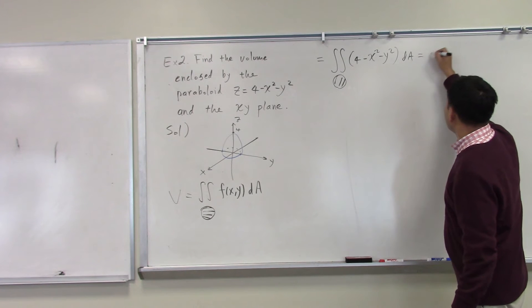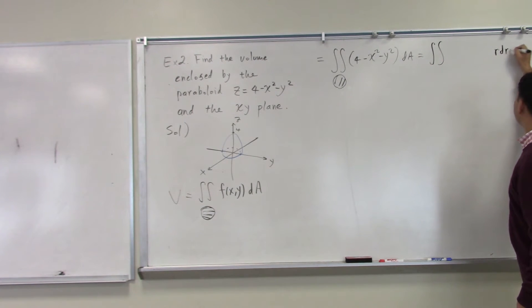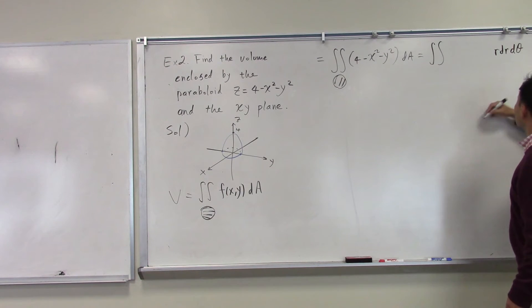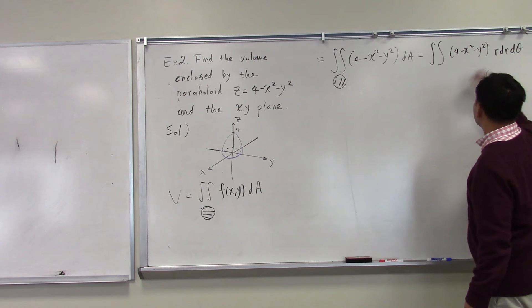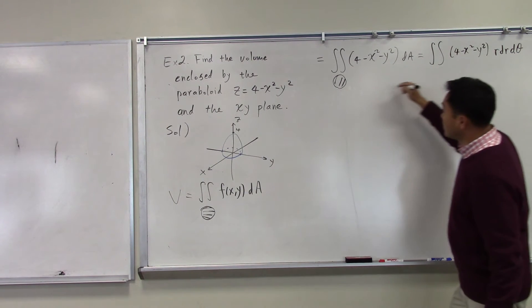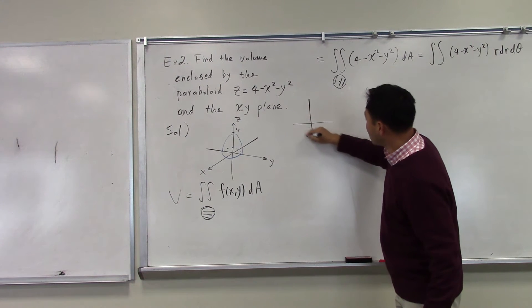So we're going to use, again, the formula is R dR dθ. Now, 4 minus x squared minus y squared. And then we have to figure out a way to describe this circle.